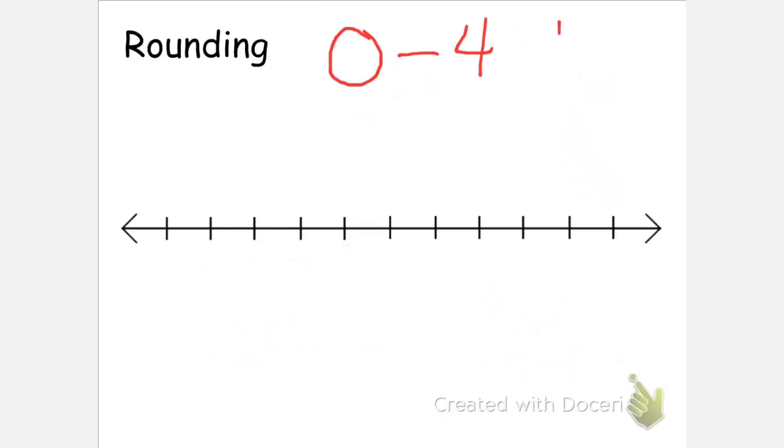There's a general rule that if the digit to the right of the digit that you're rounding to is between 0 and 4, you round down. And between 5 and 9, you round up.